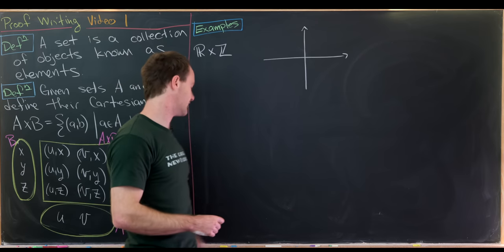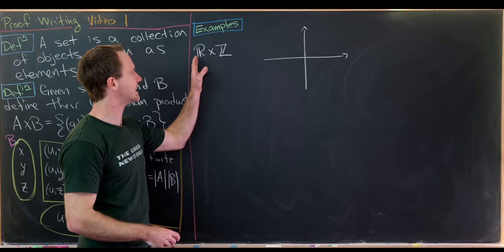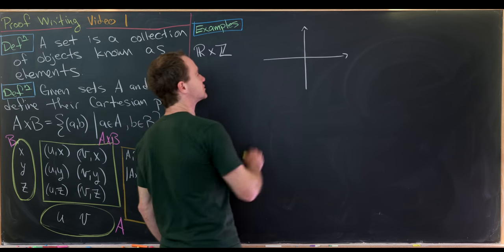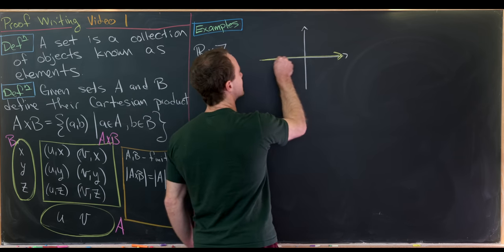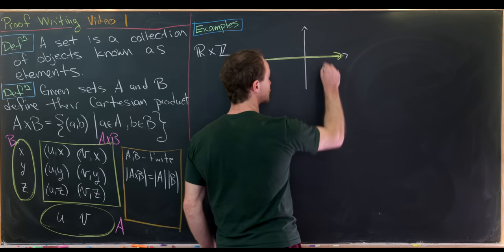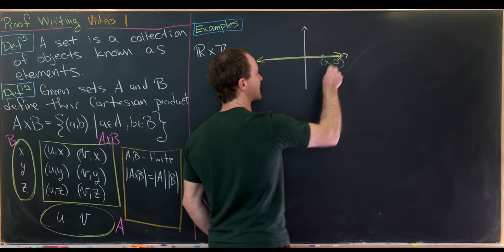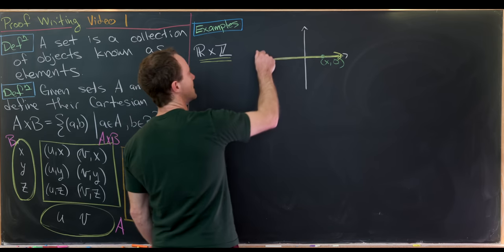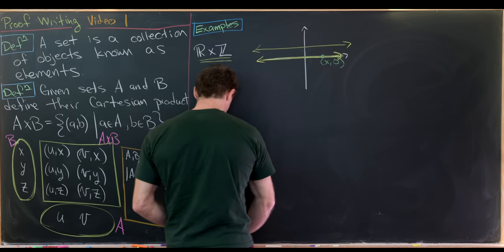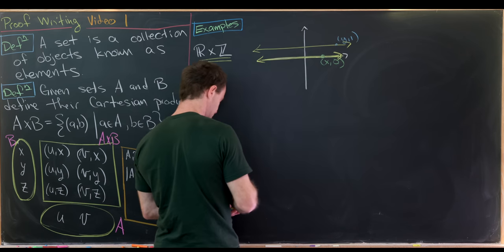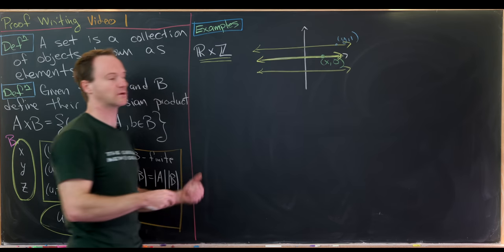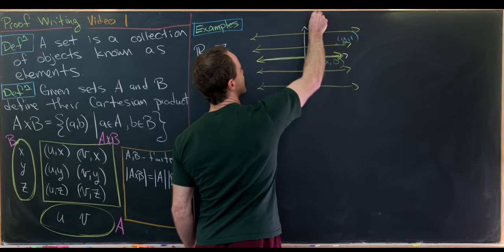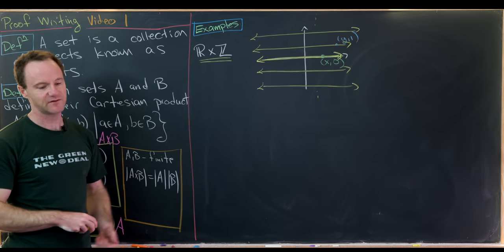Let's look at some visualization examples of Cartesian products. ℝ × ℤ lives within the Cartesian coordinate plane ℝ × ℝ. Each first coordinate can be any real number while each second coordinate is any integer. So the x-axis is in this set — first coordinate is real, second coordinate is the integer 0. We also get horizontal lines at y = 1, y = -1, y = 2, y = -2, and so on — an infinite collection of lines.